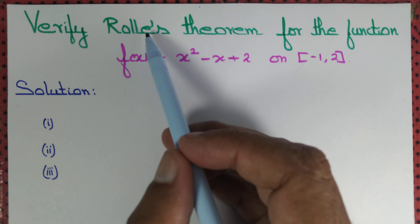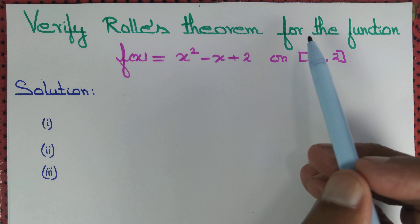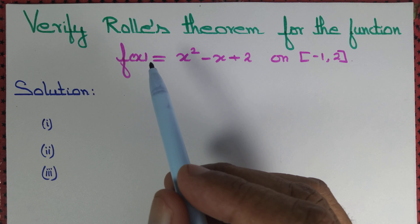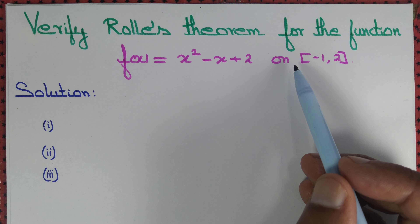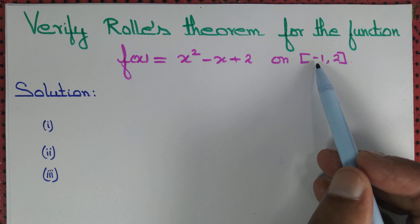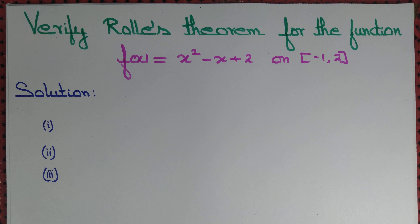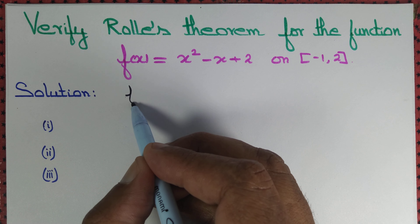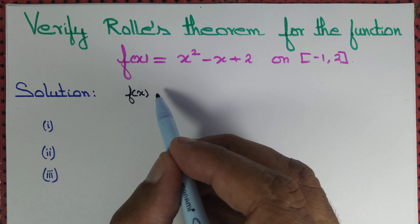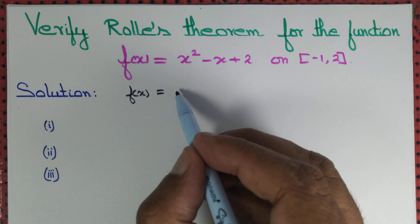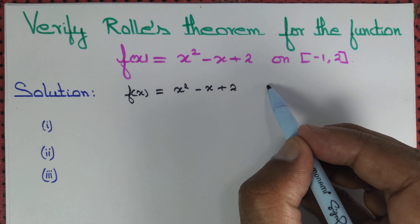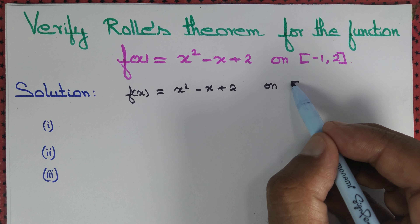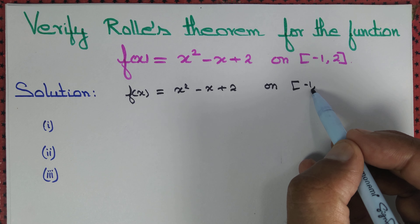Let us verify Rolle's theorem for the function f(x) = x² - x + 2 on the interval [-1, 2].